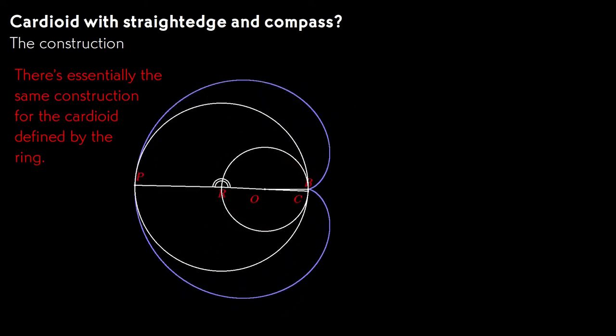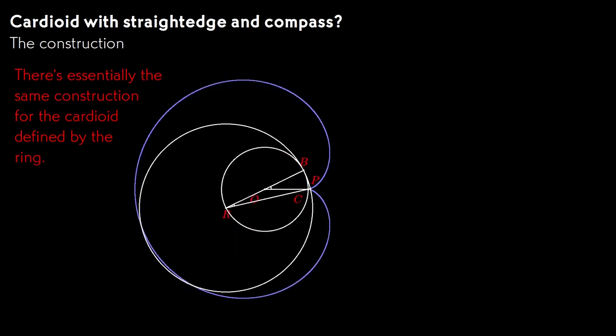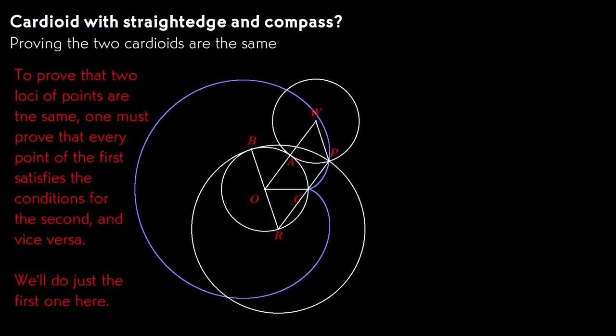We can use nearly the same construction for points on the cardioid that's defined by the ring gear. I won't go through all the details, but it's easy to follow the steps. But now, what does it mean in Greek geometry for two curves defined in this way to be the same? We have to prove that every point on the first curve is a point on the second, and vice versa. This means that every point anywhere on the plane is either on both curves or neither. I'll share just the proof that every point on the cardioid defined by the ring is the point on the one defined by the wheel, but once you have one, the other is obvious.